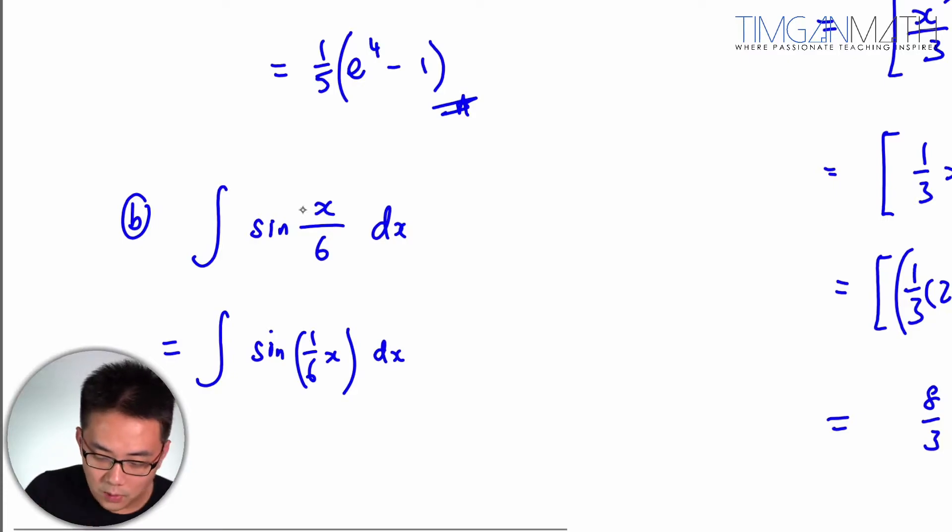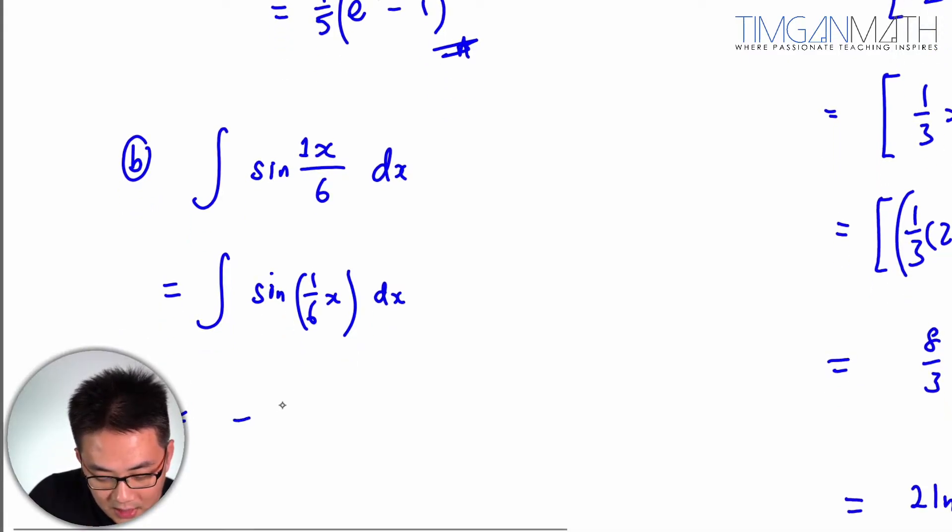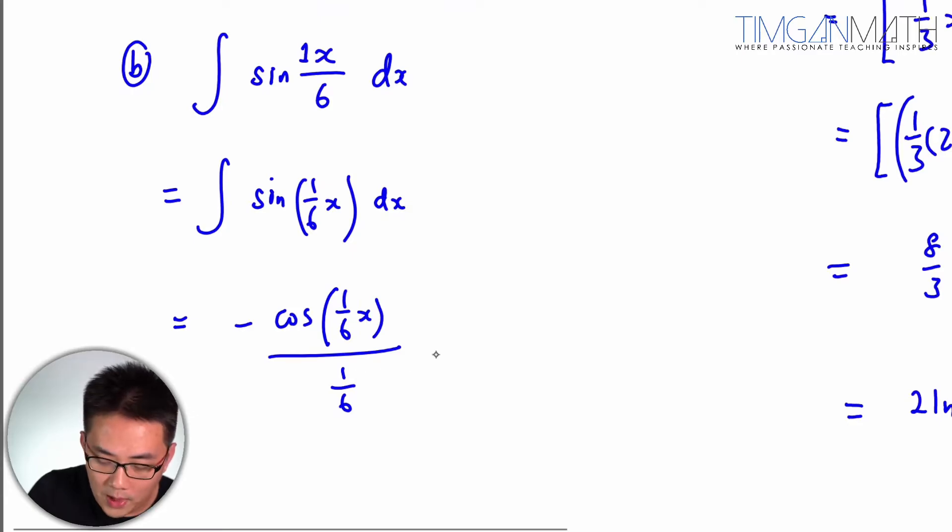So, 1 over, there's a 1 over 6 here. So just remember that. This case here will just be negative cosine 1/6 x divided by the coefficient of x, which is actually 1/6 plus c.